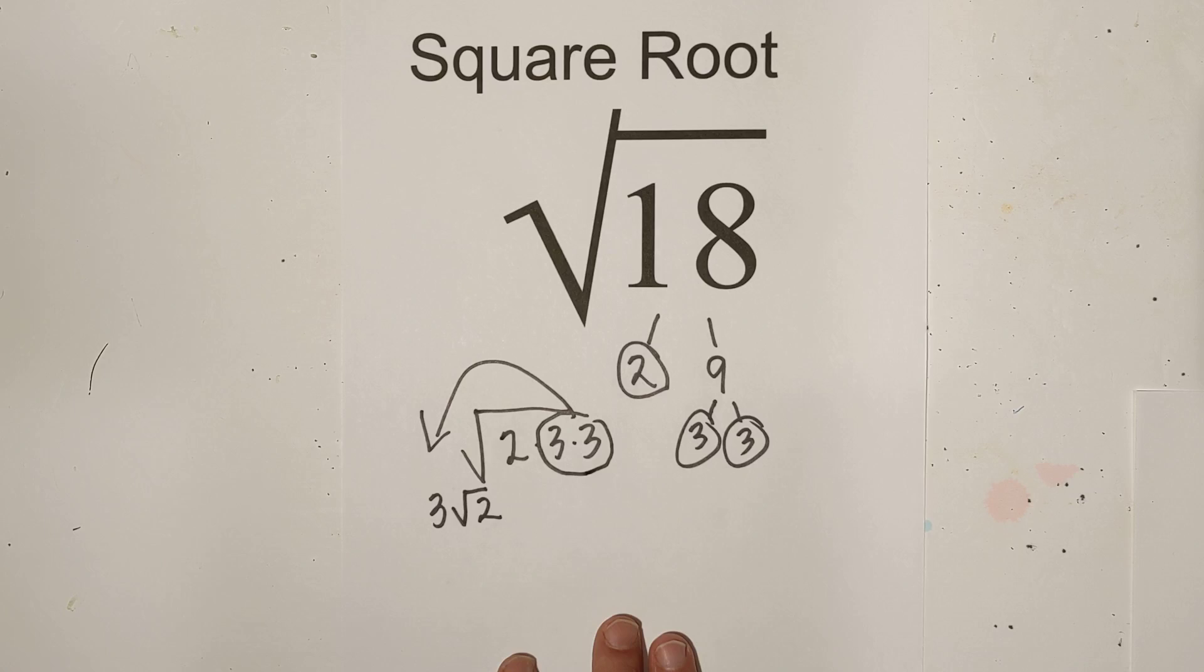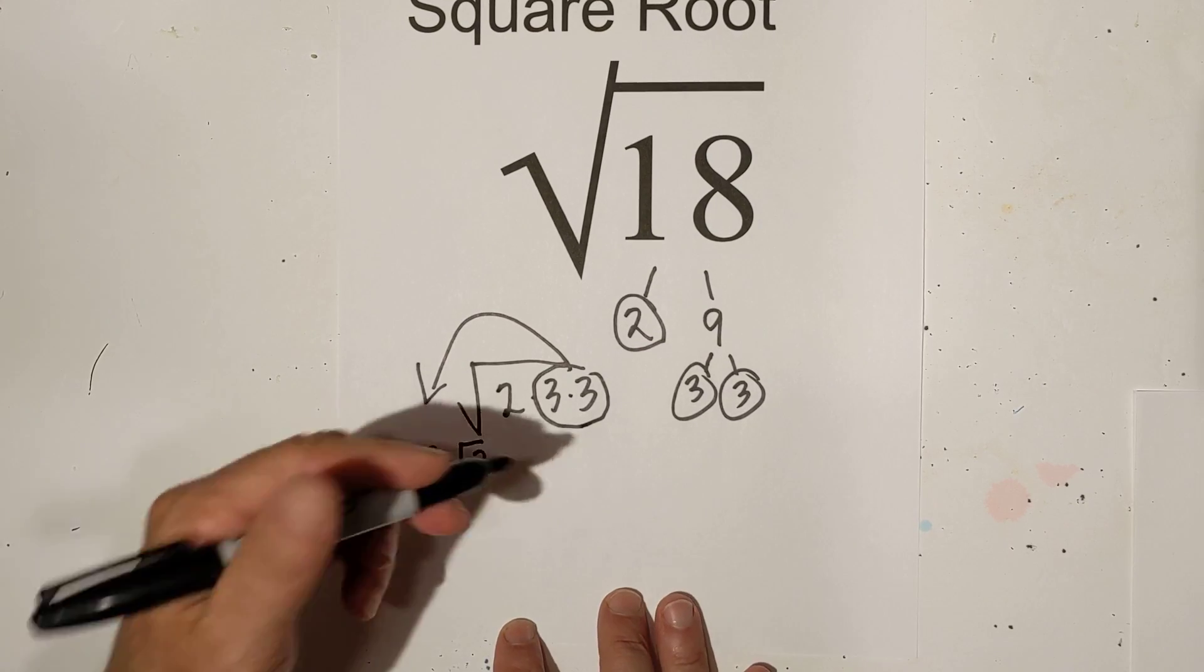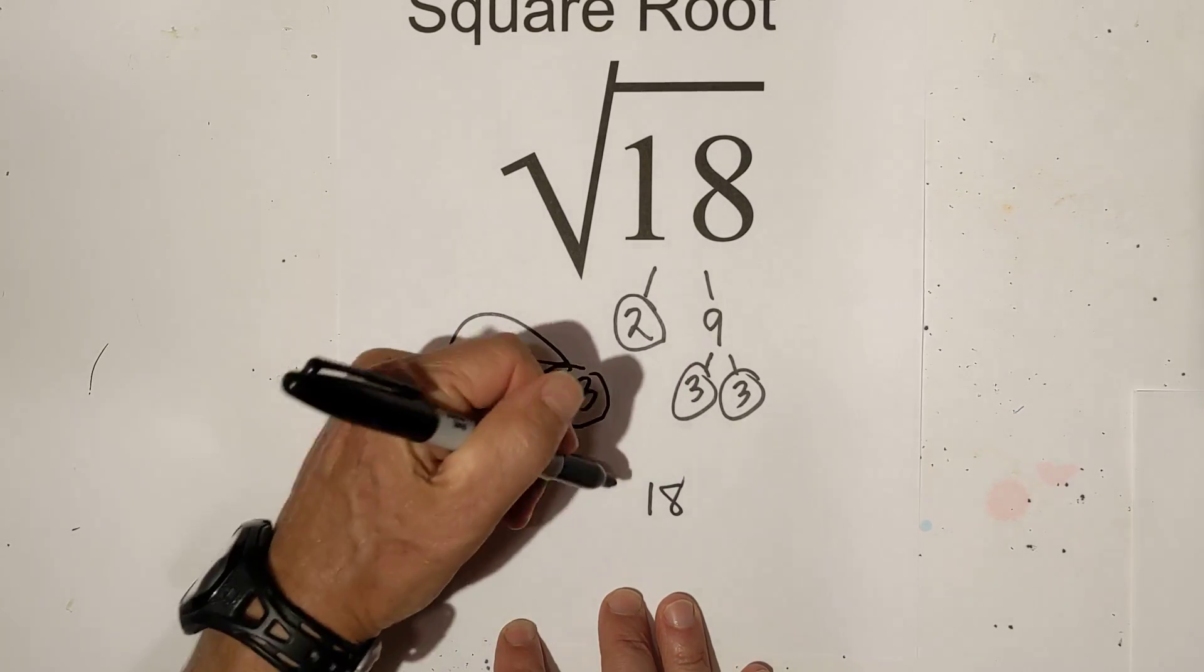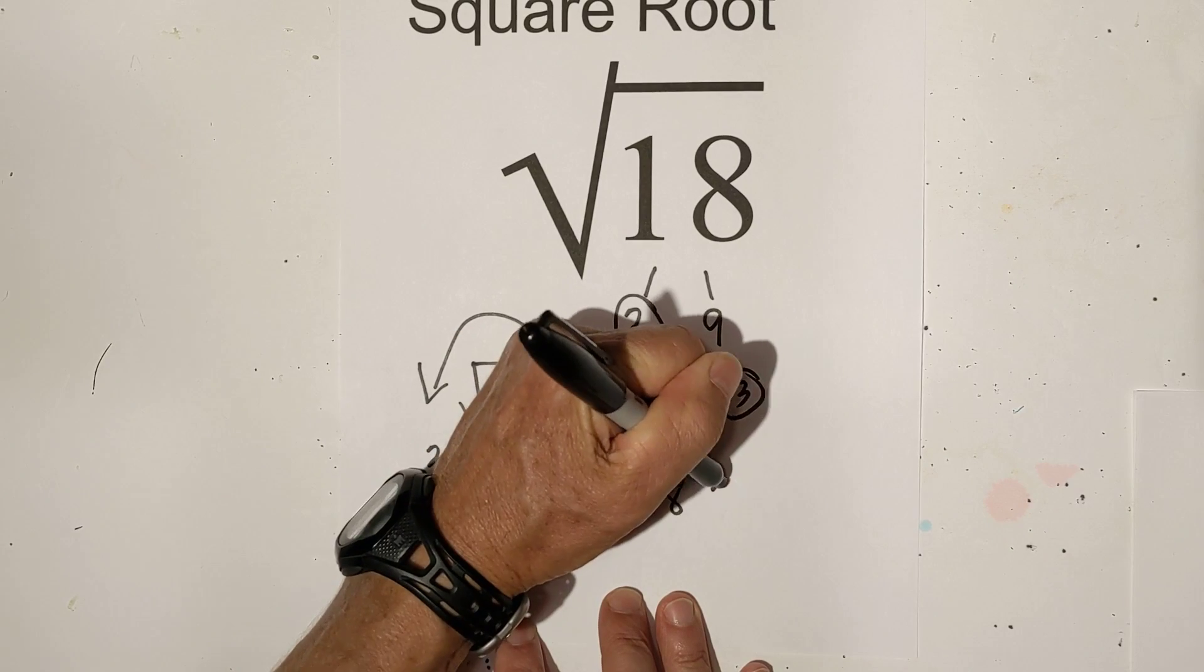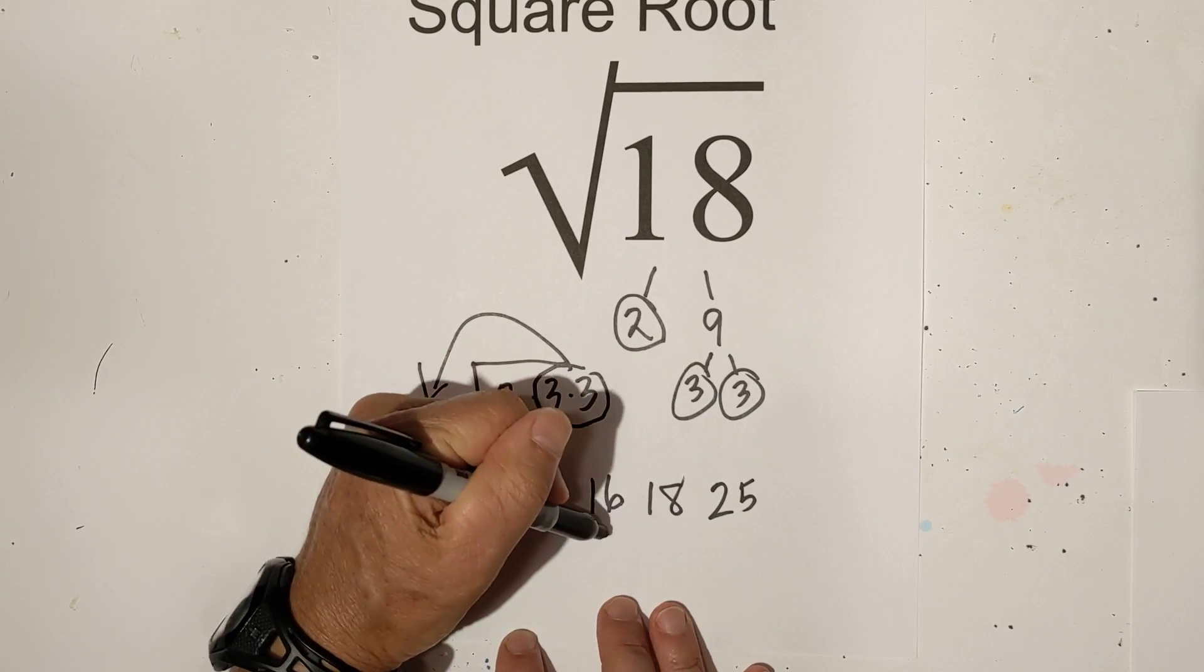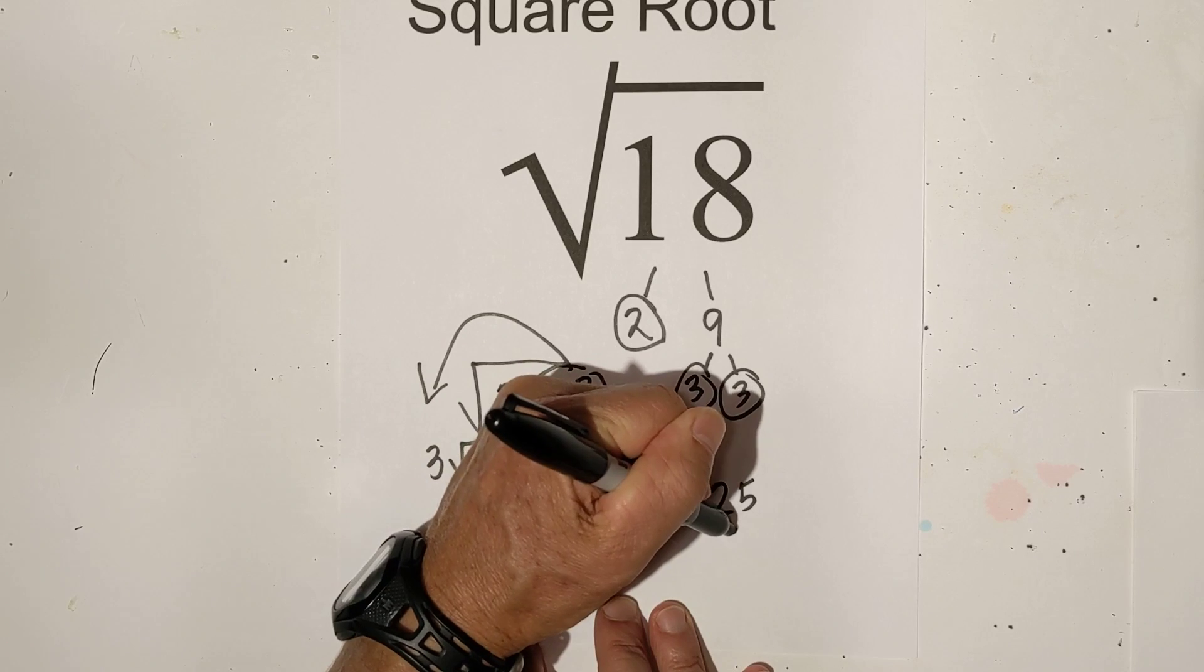Now here's a nice trick if you want to estimate it. We have 18. We know that 16 is a perfect square, 25 is a perfect square. 16 is 4, 25 is 5.